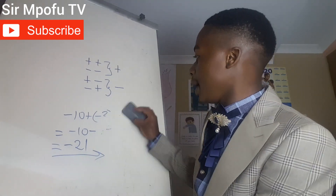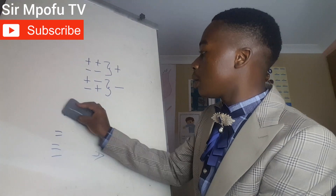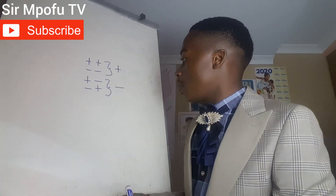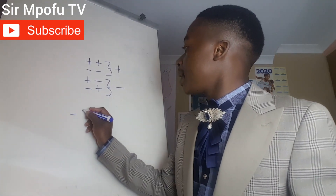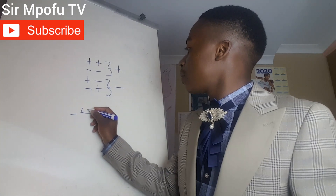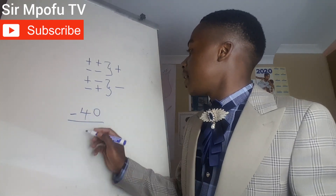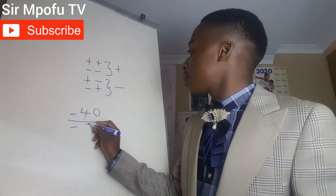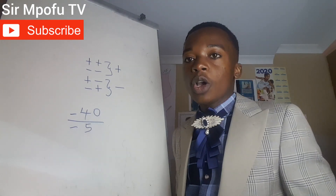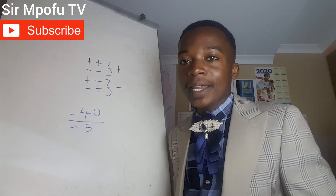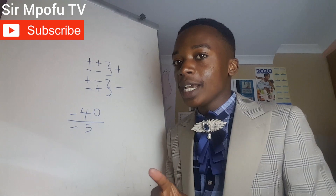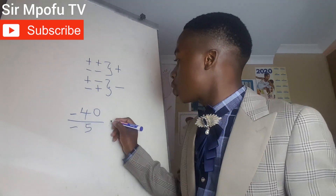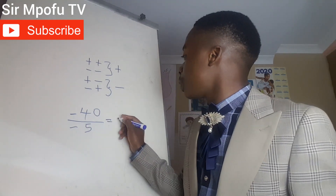Now let's see what happens when we are dividing. For example, let's say we have minus 40 divided by minus 5. You have the same signs, so your solution is going to have a positive. Your answer is going to be positive 8.